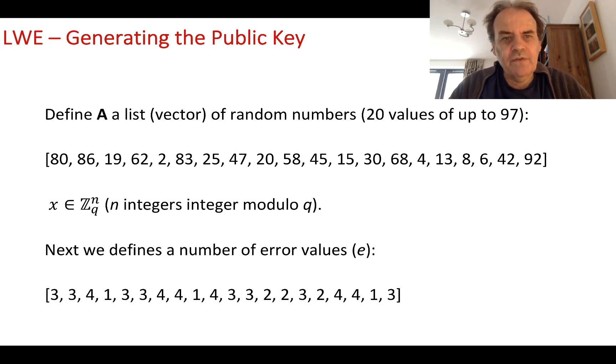The public key is made up of two vectors, or lists of numbers, A and B. First, A is a list of random numbers up to a prime number Q, which in this case is 97. We're going to pick 20 numbers at random, so n integers modulo Q. In real life, Q would be much larger, but to keep it simple we'll define it as 97.